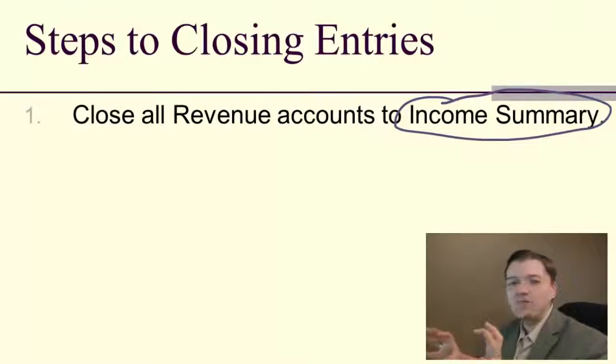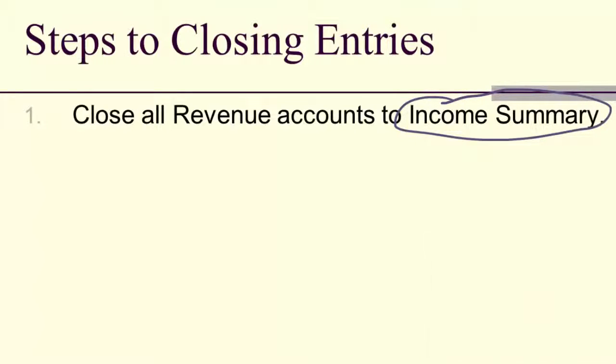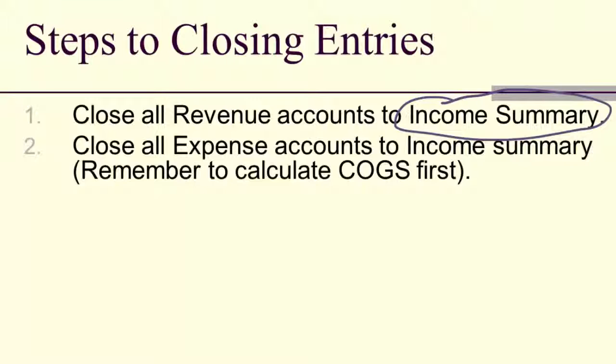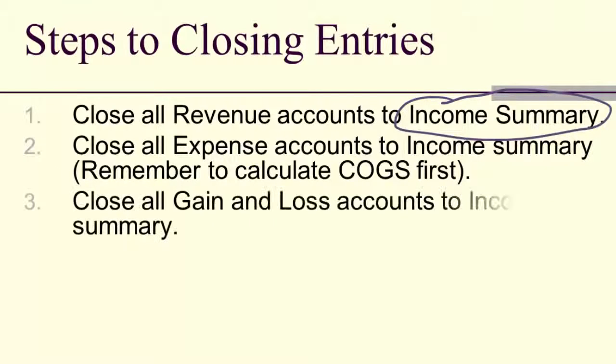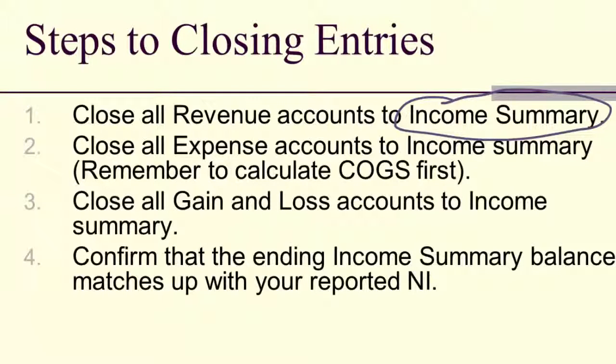If the balance in income summary matches net income, then we've done it right. If not, then either the income statement is wrong or the closing entries are wrong, but I've got a check there. If I've found a mistake, I can go back and make sure I get that fixed. So we close all of the revenues into income summary, we then close all of the expenses into income summary. Remember, we've already done cost of goods sold, used it in our income statement. Now I'm including that with the other expenses. And then close all of my gains and all of my losses.